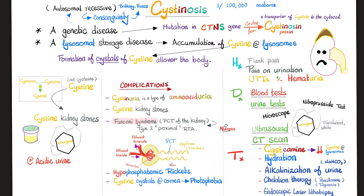Cystinosis can cause accumulation of cystin crystals in the cornea, leading to photophobia and vision problems. Cystinosis is especially harsh on the most active segment of the kidney, the proximal convoluted tubule. When the proximal convoluted tubule is damaged, we call this Fanconi syndrome — not to be confused with Fanconi anemia, which are two completely separate diseases. Fanconi syndrome can lead to type 2, i.e., proximal renal tubular acidosis.